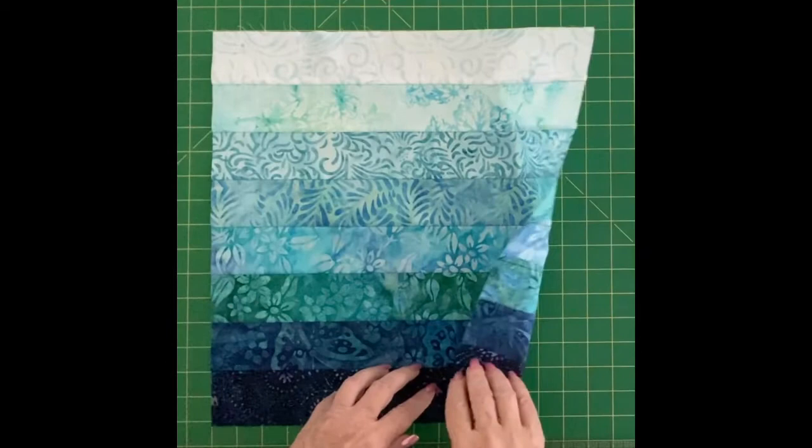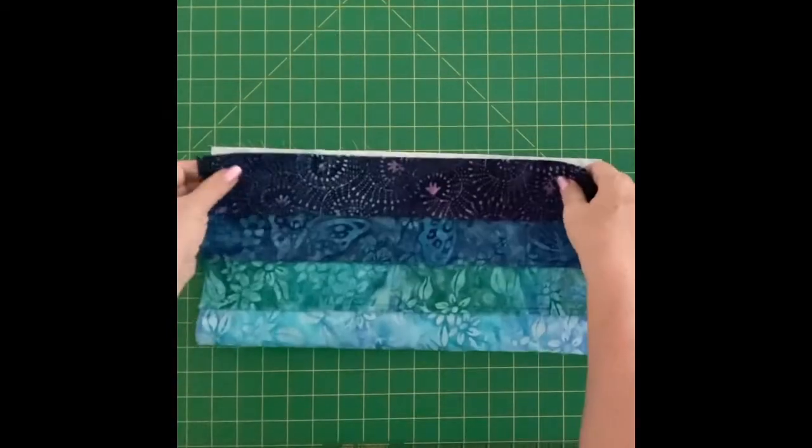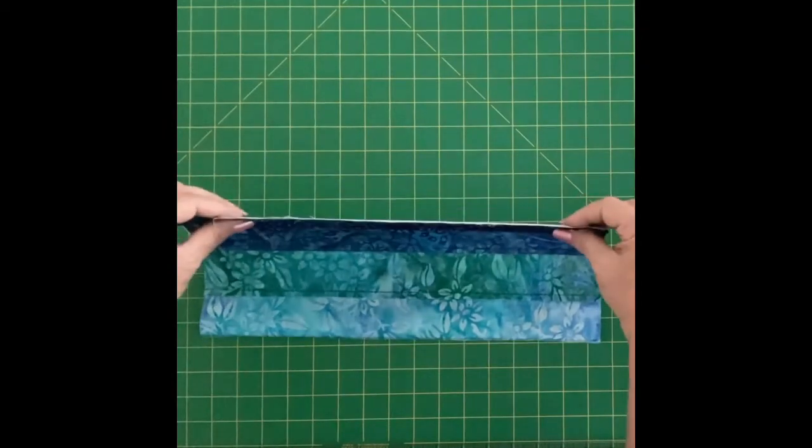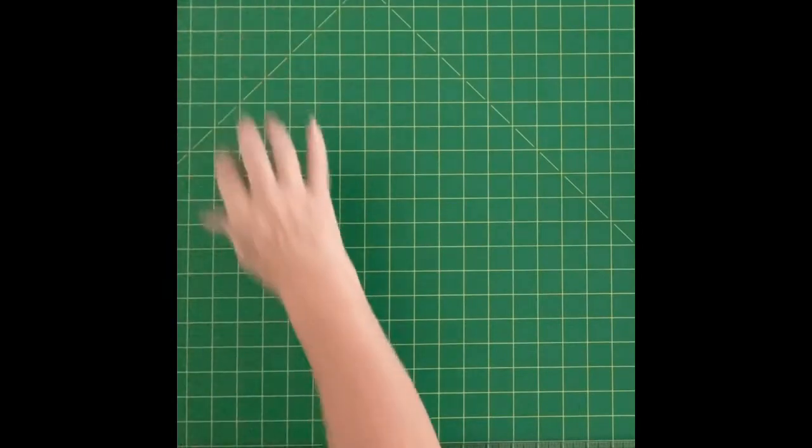We're going to be pressing the seam allowances towards the light, and then we're going to tube it. We're going to sew the dark end to the light end and make a tube. We're going to be doing a Bargello type technique with this.